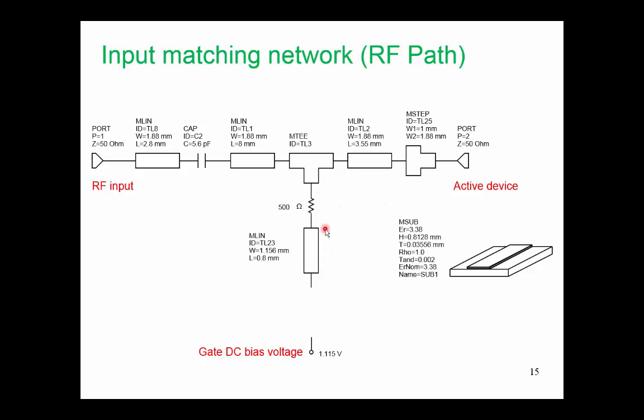This transmission line here includes the effect of the mounting connection, the mounting pad, and also the fact that our 500 ohm resistor actually has a finite length. All together, this really is the model of our 500 ohm resistor. And then below this is all of our bias circuitry.